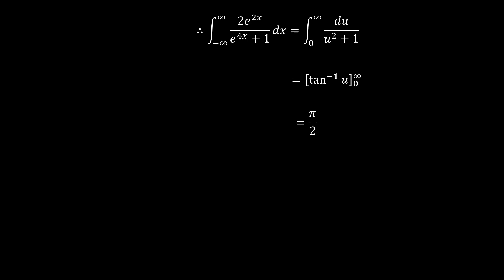As u tends to positive infinity, the arc tangent of u would tend to π/2. As u tends to 0, when u is equal to 0, the arc tangent of u will be 0. So the answer that we've been looking for is π/2.